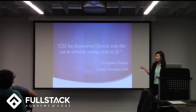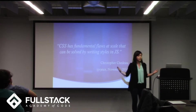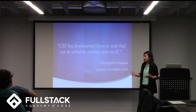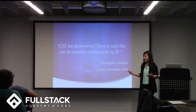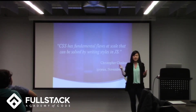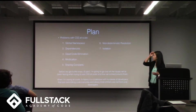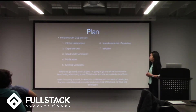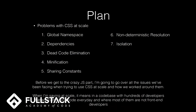But what does he actually mean? When he talks about fundamental flaws at scale, he's talking about really large code bases — code bases on which you might have dozens, if not hundreds of developers working day in and day out, pushing and committing code. And when you have an app on that scale, it's really easy to get stuck in CSS. The question is why. This was one of the first slides in Christopher's presentation, outlining what he sees as the major problems with CSS. The one I want to focus on is number one: global namespace.